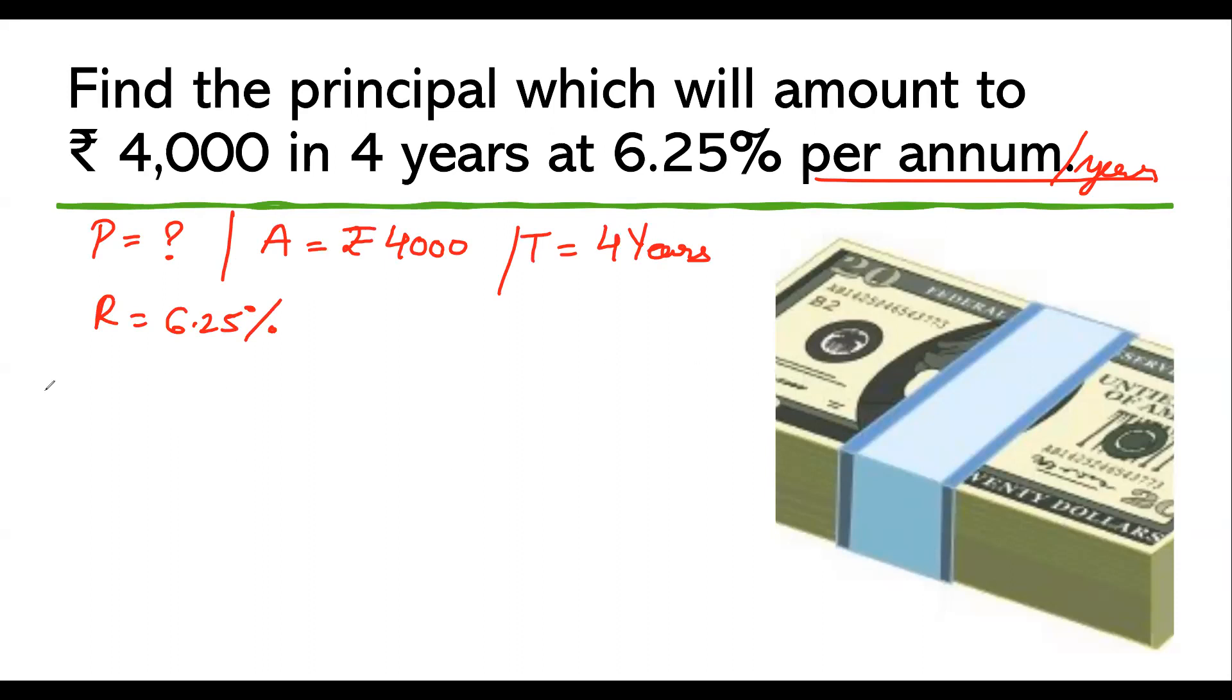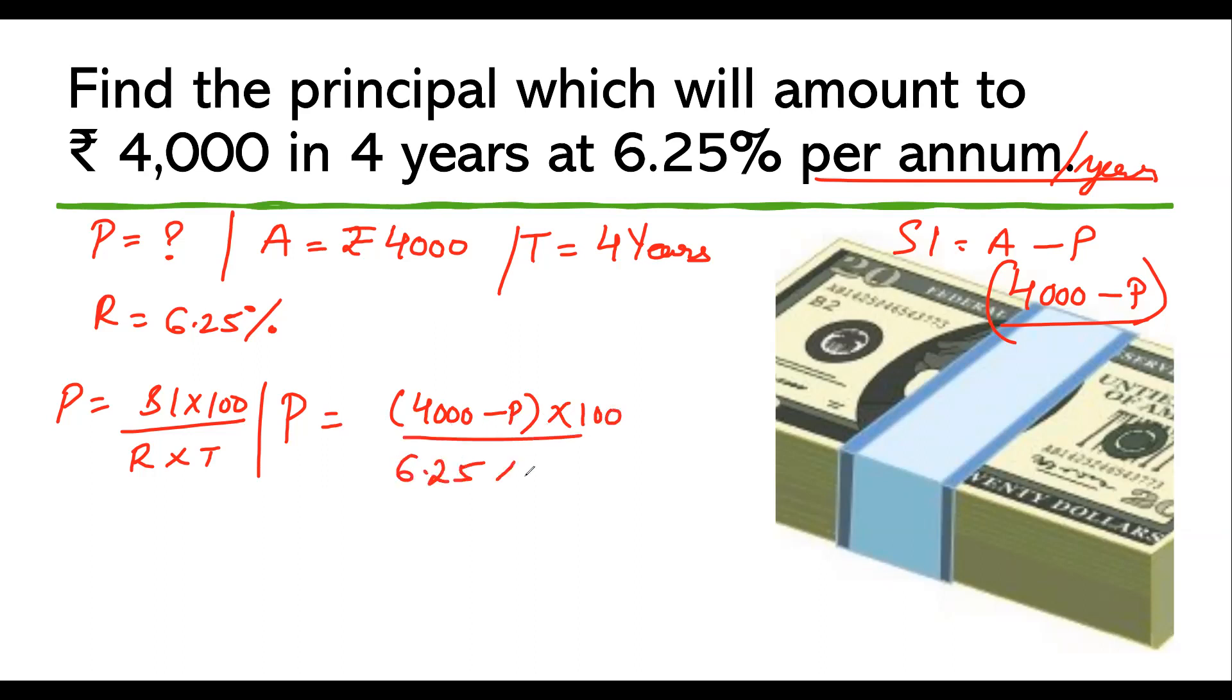So we need the principle formula which we just studied: P = SI × 100 / (R × T). But we don't have the value of SI. In this case we have to use the relation: SI = Amount - Principle. We know amount but not principle, so in place of SI we can write 4,000 - P. So P = (4,000 - P) × 100 / (6.25 × 4).